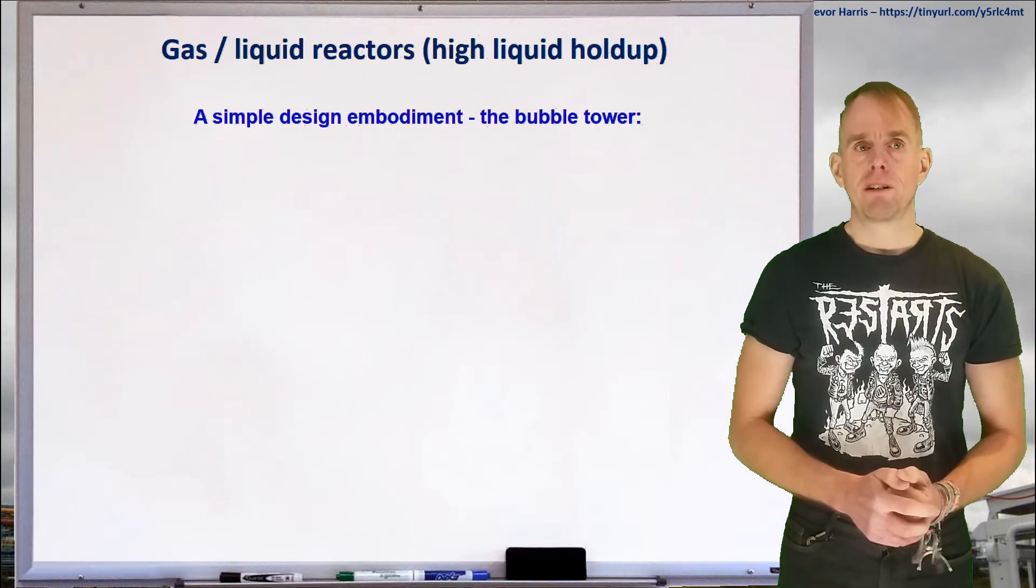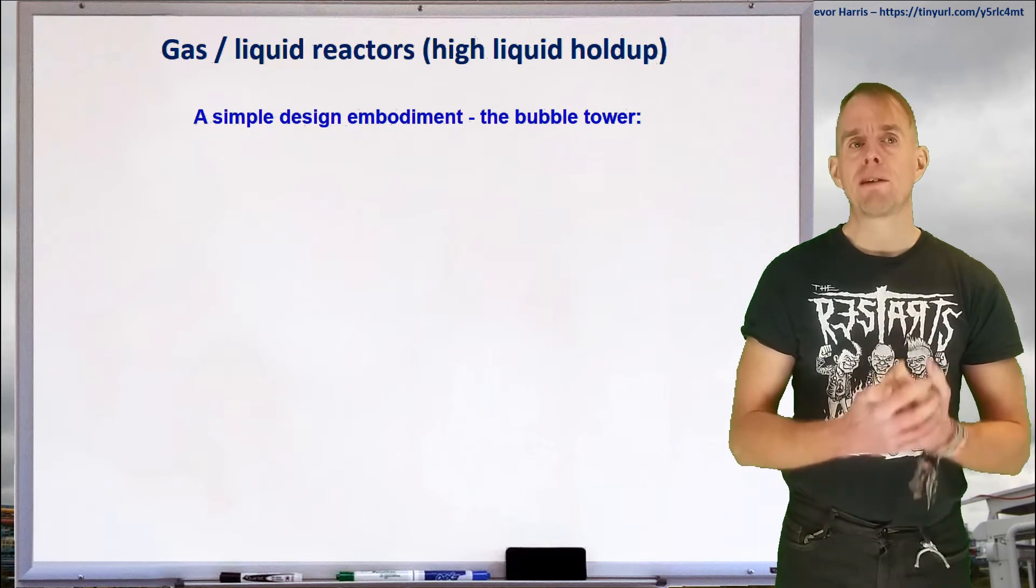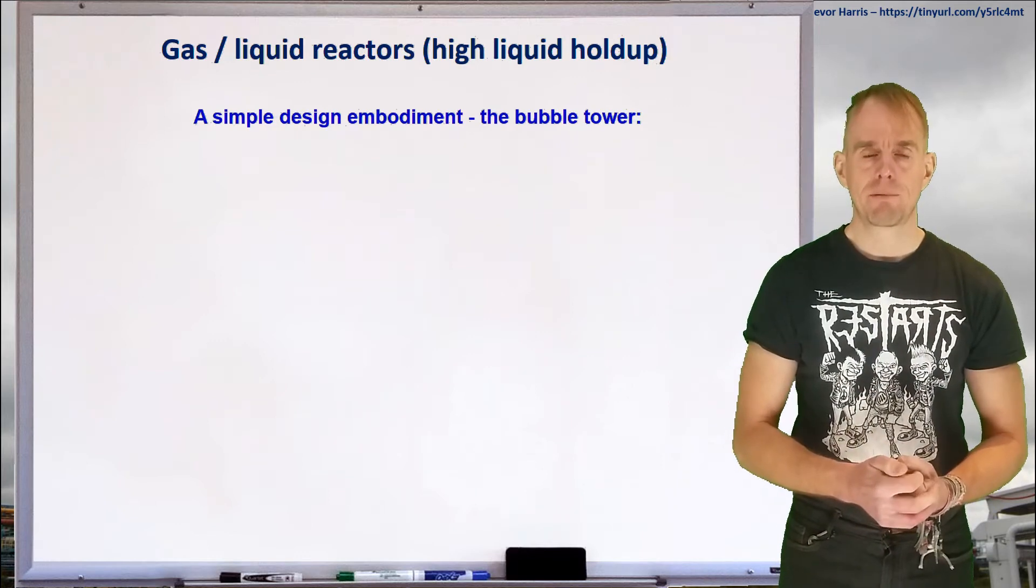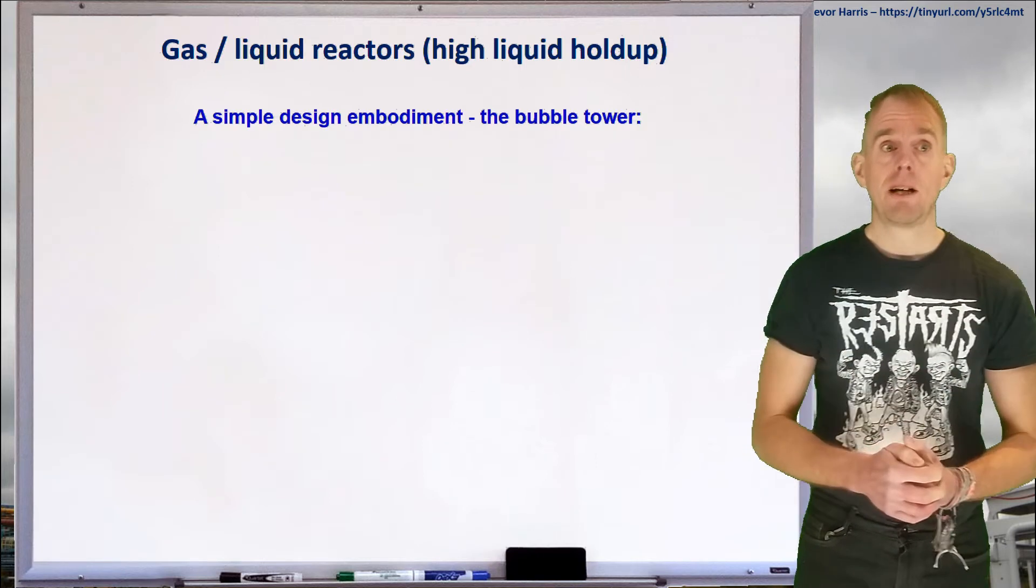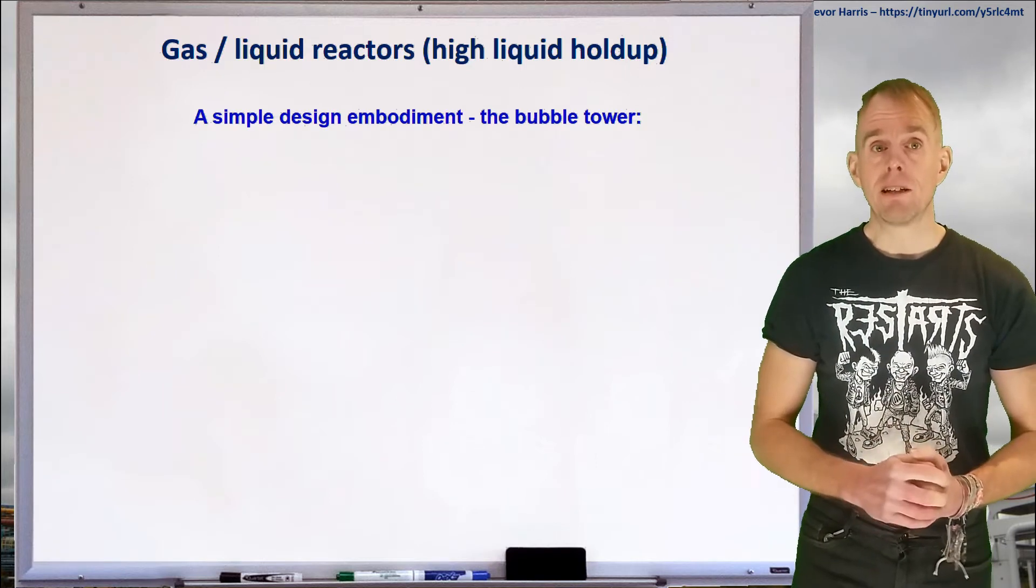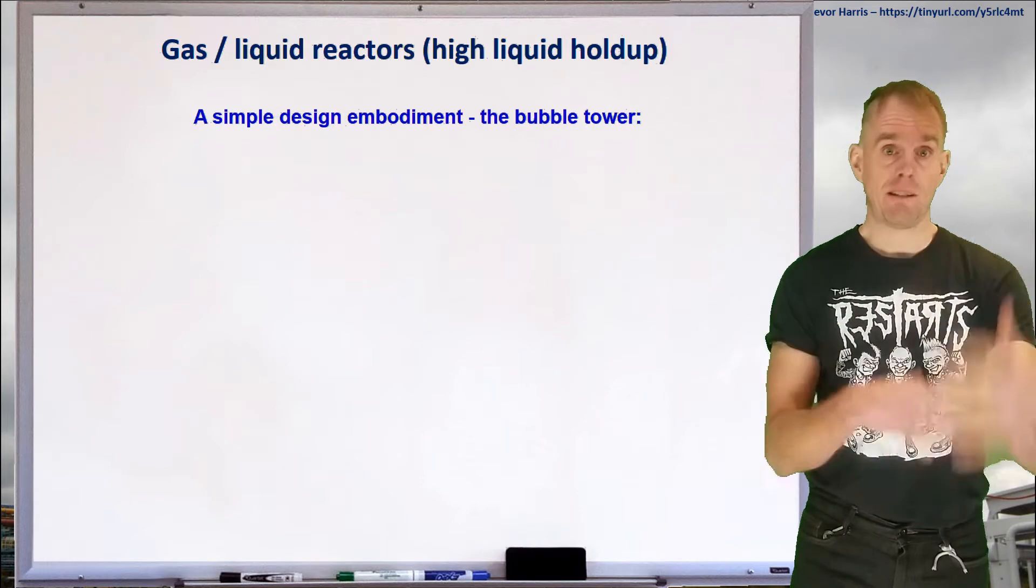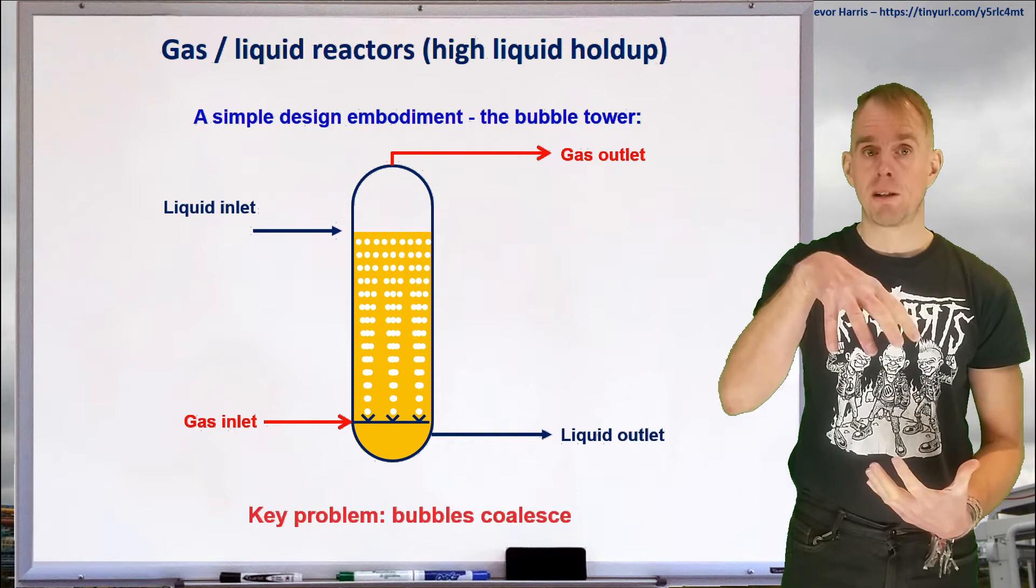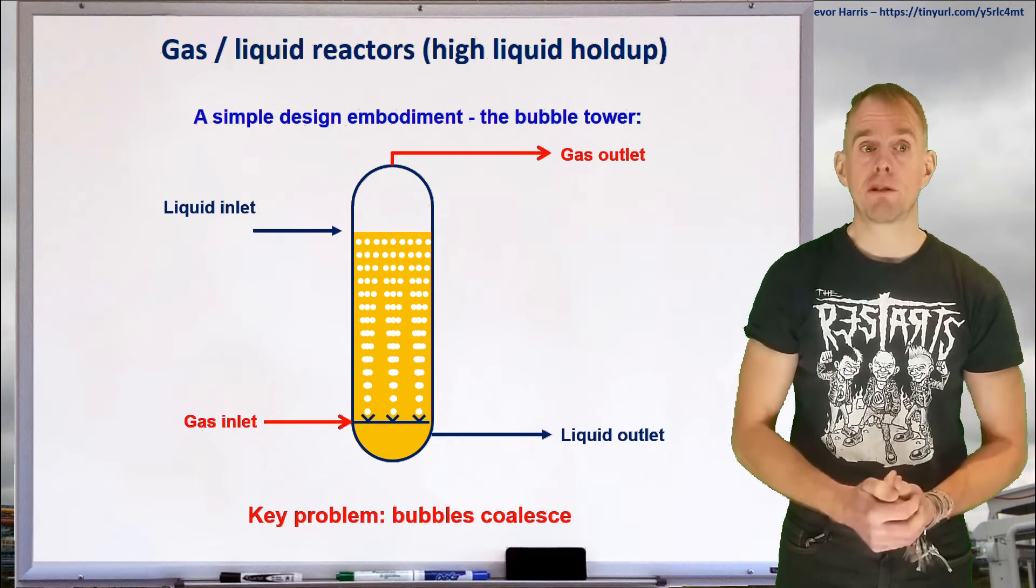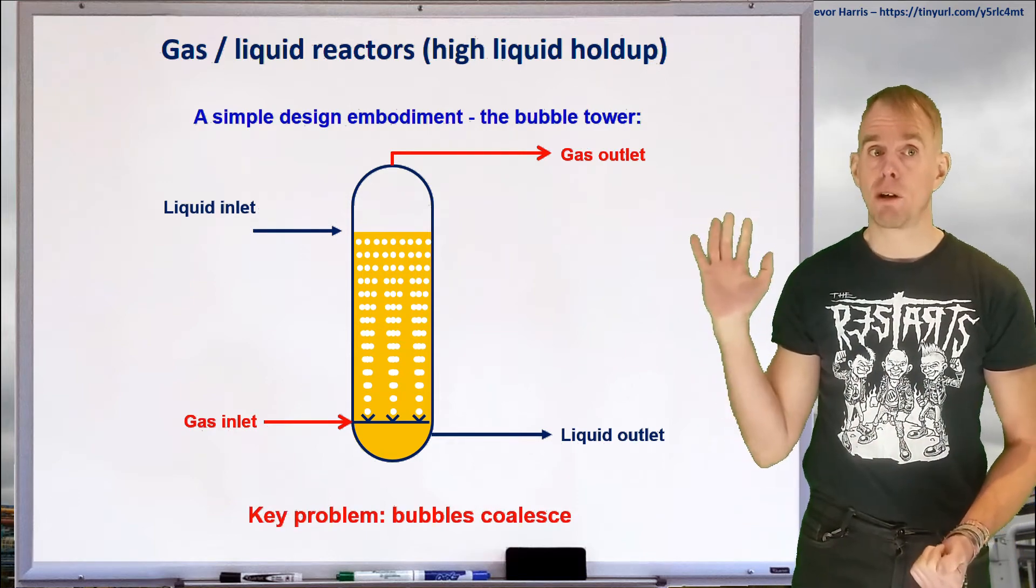Let's think about the reverse scenario. Let's think about systems where we have high liquid holdup, where we've got far greater liquid flow now than we have gas flow. And one simple design embodiment here is to take our spray tower and effectively turn it upside down. Rather than spraying liquid at the top with a glorified shower head, let's just bubble gas in at the bottom. So here we have a bubble column.